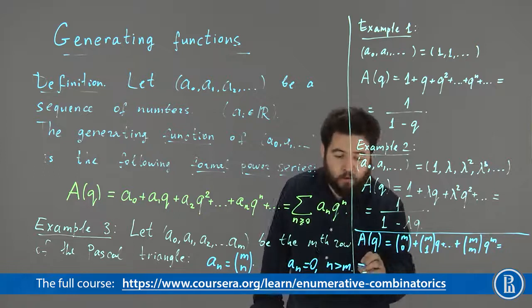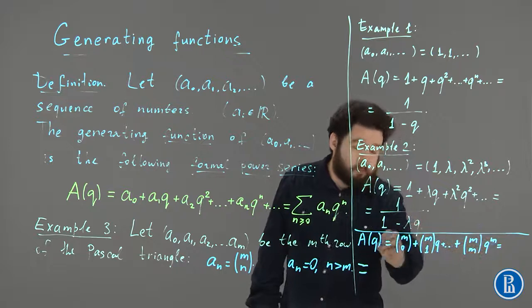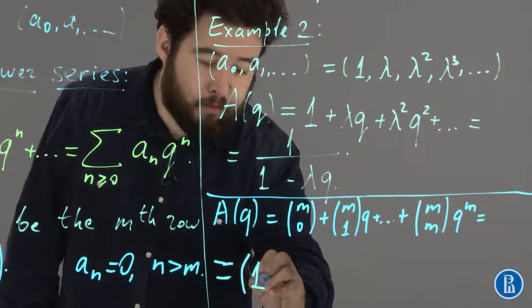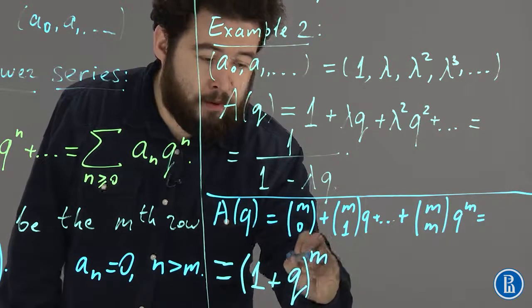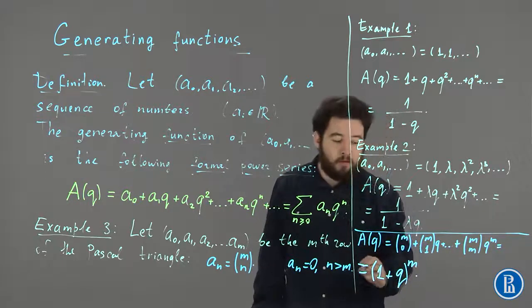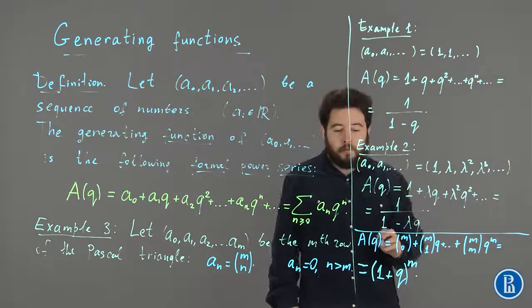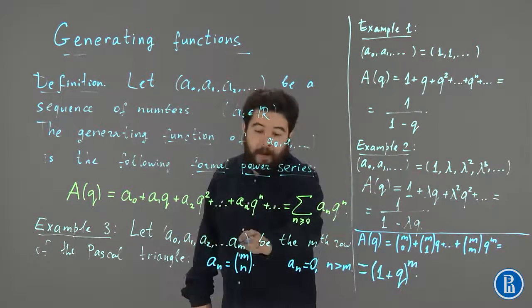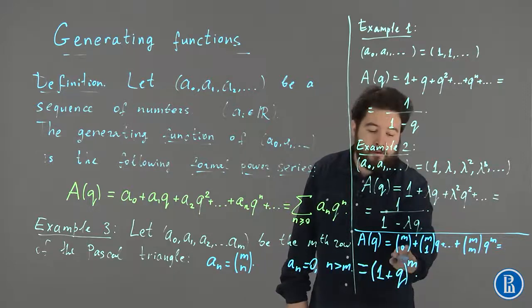And you know very well that this is, in fact, the following expression. This is 1 plus q to the power m. So, this is Newton's binomial theorem. So, Newton's binomial theorem tells us that the generating function for the mth row of the Pascal triangle is nothing but 1 plus q to the power m.